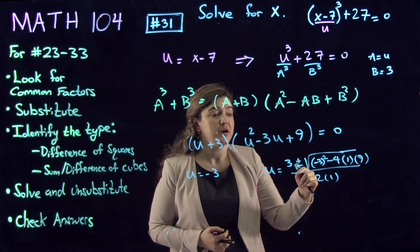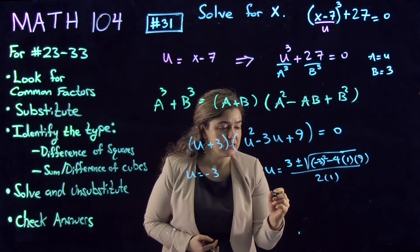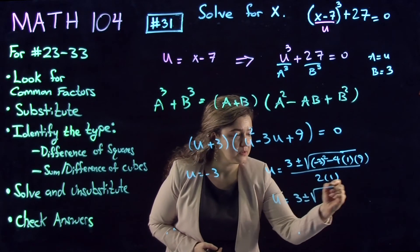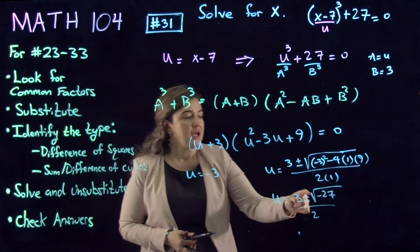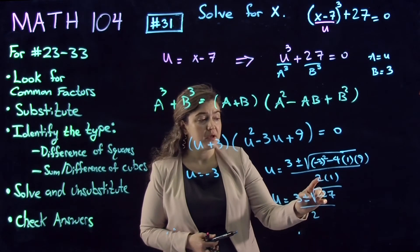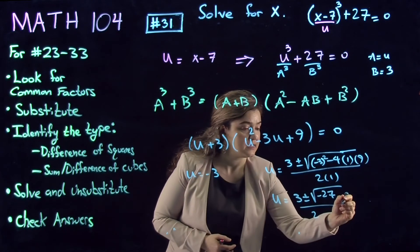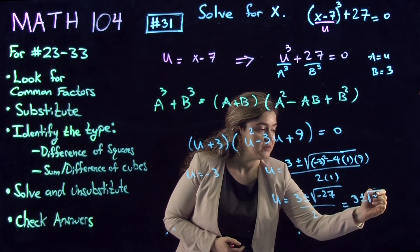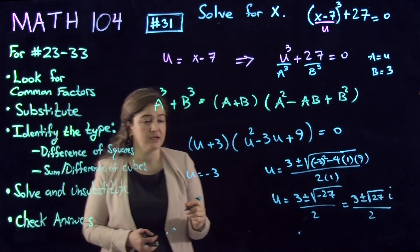The entire thing becomes -27. So this solution is u = (3 ± √(-27))/2. Square root of a negative number, we can separate it: 3 ± √27i divided by 2.